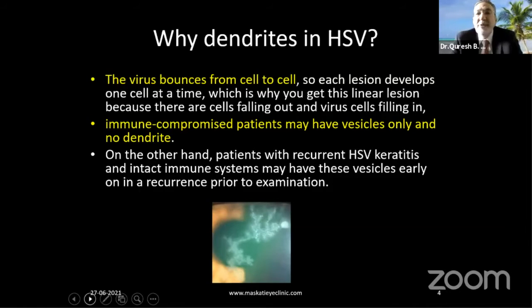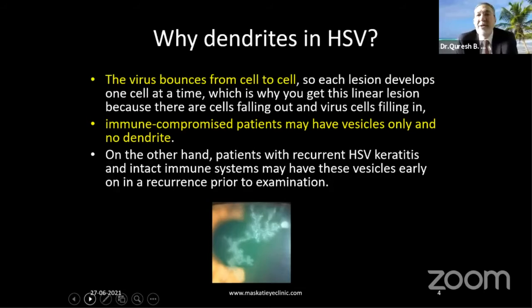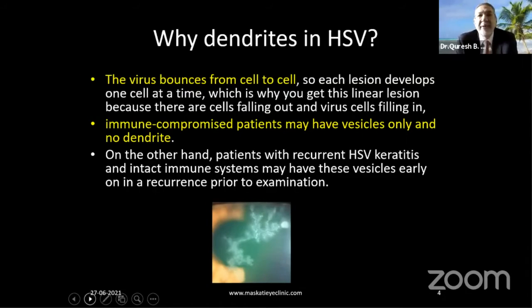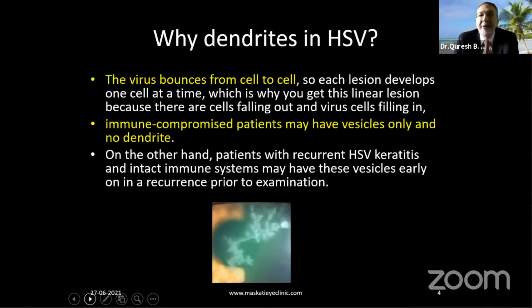This applies to immune-competent patients. Immunocompromised patients may have non-classical features — they may have only vesicles that last beyond 24 hours with no dendrite ever forming. On the other hand, patients with recurrent keratitis — fourth or fifth attack of HSV keratitis — even with intact immune systems, may have vesicles early in a recurrence prior to examination, so by the time you see them they'll already have dendrites. These are some of the variations in dendrite presentation.